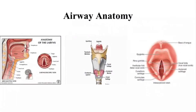I'd like to start by discussing airway anatomy and the most important structures needed for intubation. Here you can see the base of the tongue, epiglottis, false vocal cords, true vocal cords, and arytenoids.